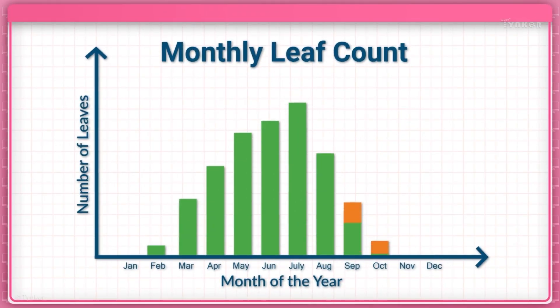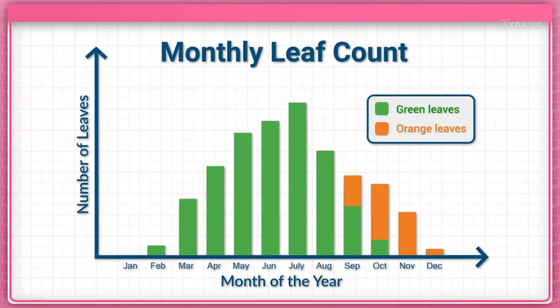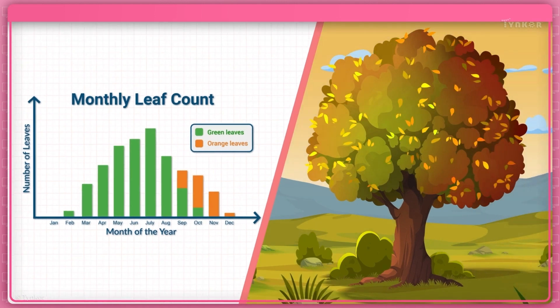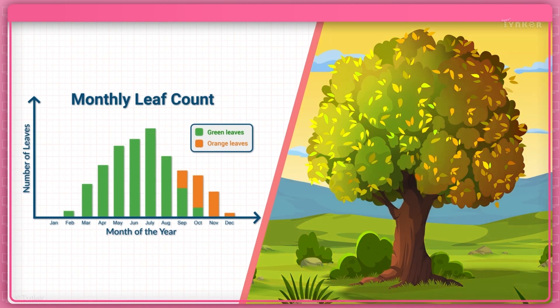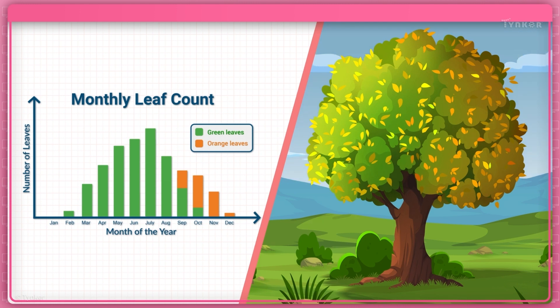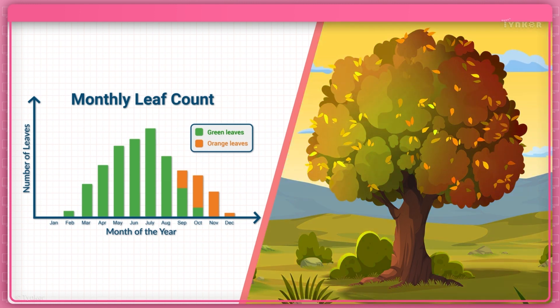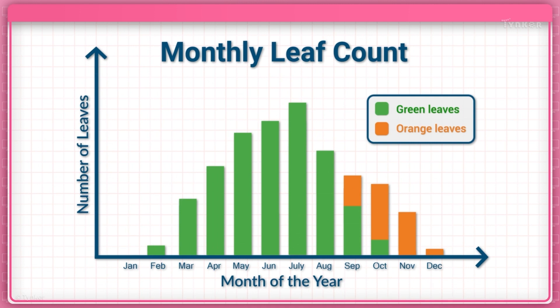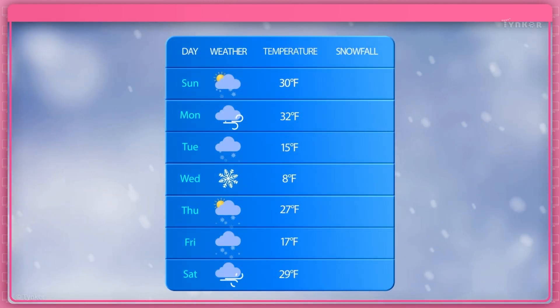Now, let's consider this chart and analyze the data. This chart shows the number of leaves on trees during each month of the year and what color those leaves are. By analyzing the data in the chart, we can see exactly when these changes in leaf count and color happened during the year. We can conclude, for example, that the trees are greenest and leafiest in the month of July. We can analyze data to predict certain outcomes.